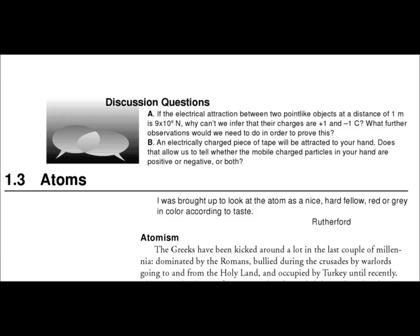Discussion questions. If the electrical attraction between two point-like objects at a distance of 1 meter is 9 times 10, why can't we infer that their charges are plus 1 and minus 1 Coulomb? What further observations would we need to do in order to prove this? An electrically charged piece of paper will be attracted to your hand. Does that allow us to tell whether the mobile charged particles in your hand are positive or negative, or both?